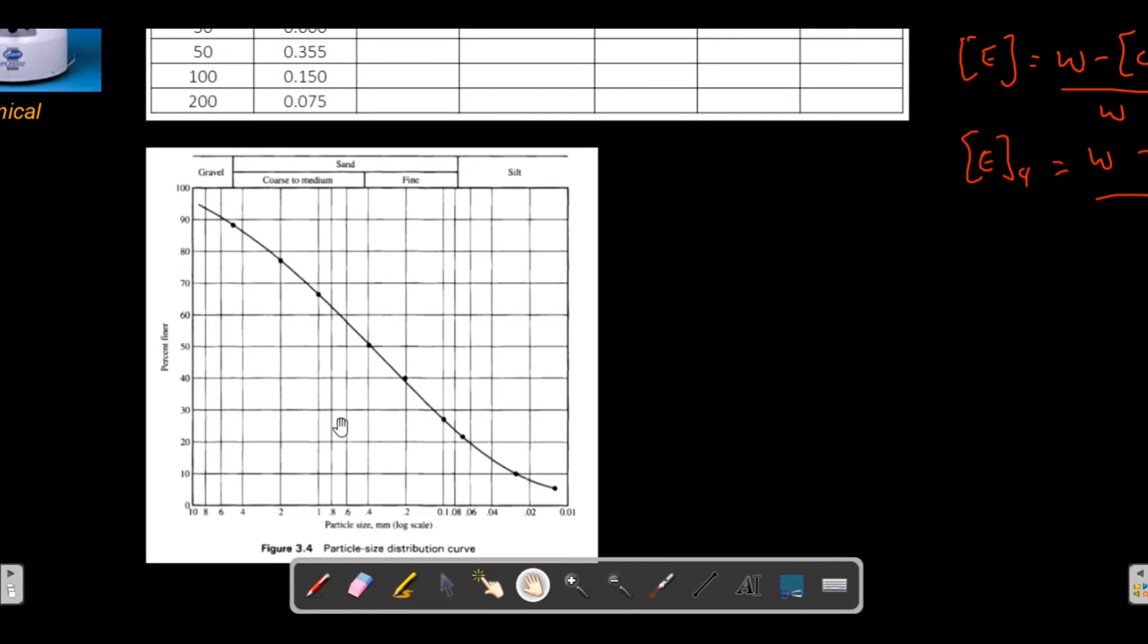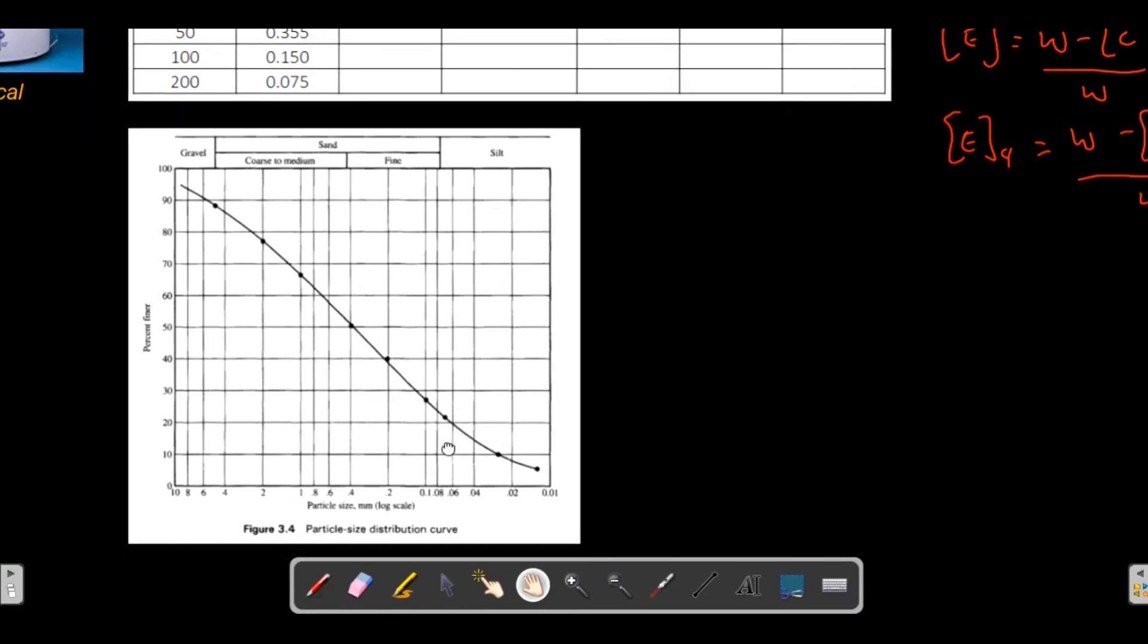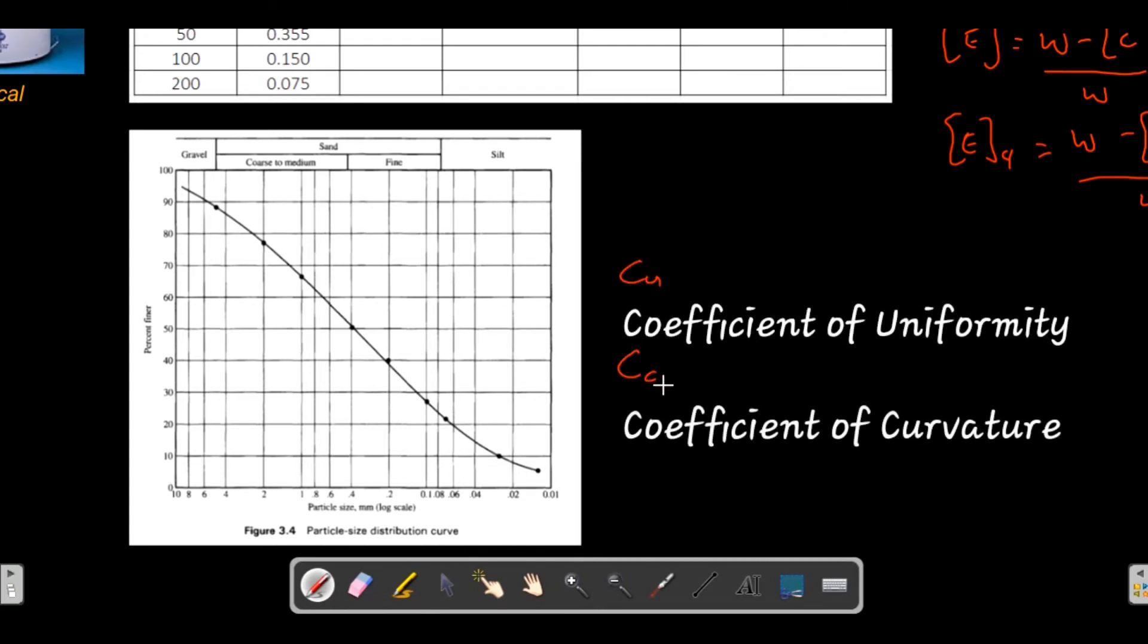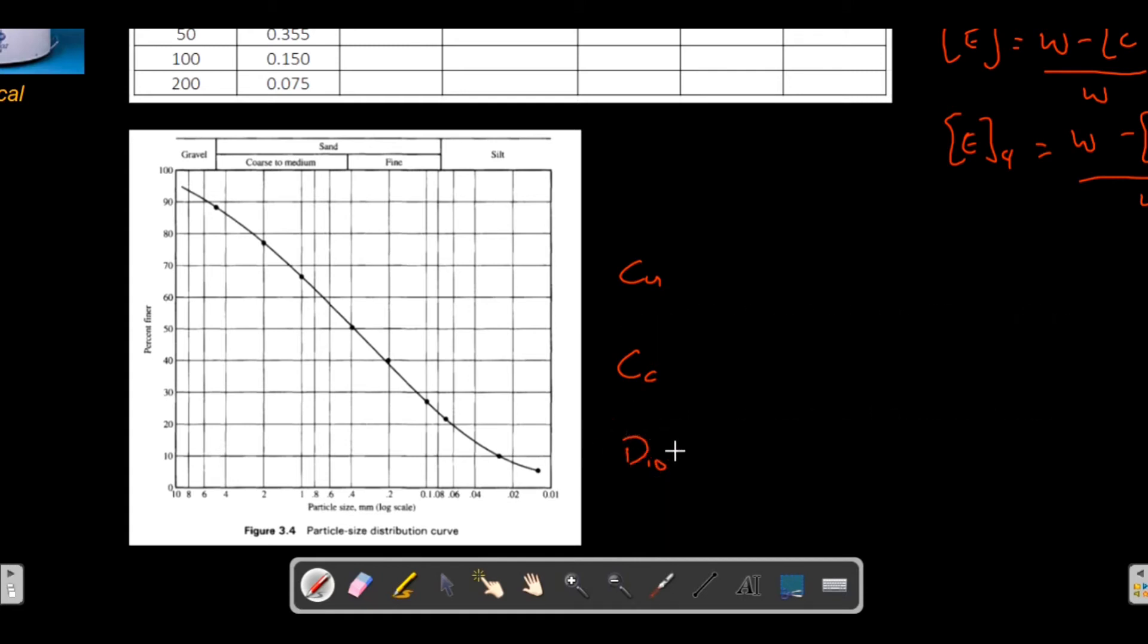The graduation of the x-axis is not the same with the y-axis scale. So it's a semi-log scale. What's important here in the particle size distribution curve is to determine the coefficient of uniformity or CU, the coefficient of curvature, and D10.